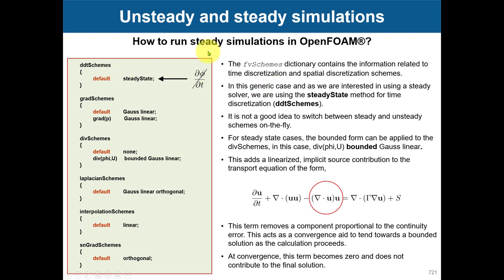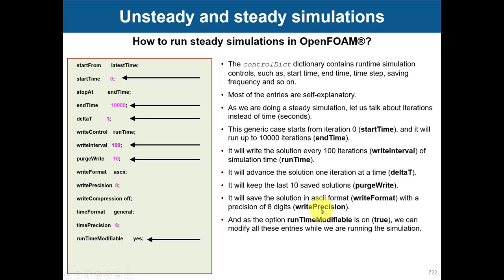In fvSchemes for steady simulations, you need to define a steady state. In the discretization of the divergence schemes, you have the option to add the keyword 'bounded'. This helps in linearizing your equations when using steady simulations. It is not compulsory, but it is recommended. This keyword bounded in divergence schemes relates to steady simulations and specific terms, just to avoid the accumulation of too much error — remember that this is a huge model, not a true steady state.